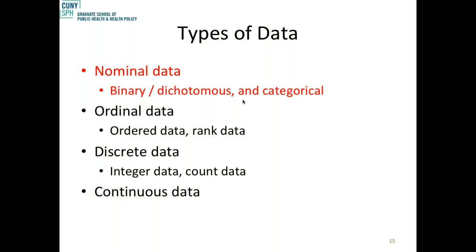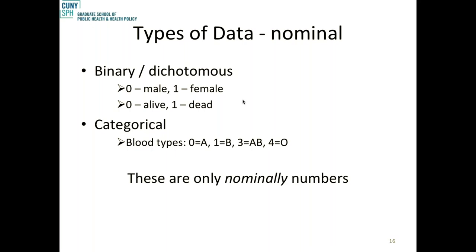Nominal data is also called categorical when instead of two categories you have multiple — like eye color or model of car. Blood types are categorical: A, B, AB, O. A lot of times we translate nominal data into simple integers. For instance, zero for male and one for female, or zero for A, one for B, three for AB, four for O. We do this because it's much easier to input into a computer — fewer keystrokes and much harder to make entry mistakes. Computers may not recognize 'male' versus 'MAIL' or uppercase versus lowercase.